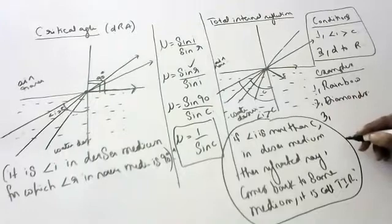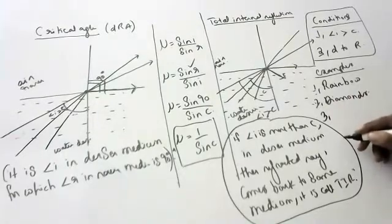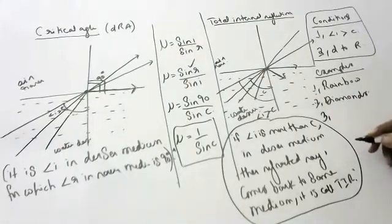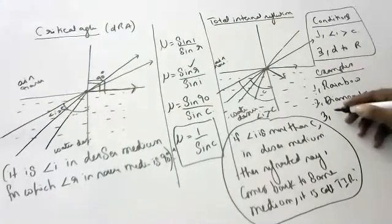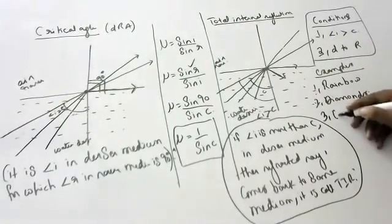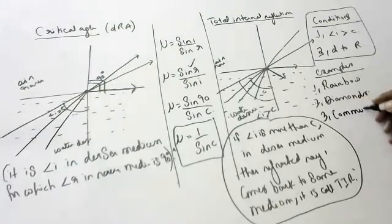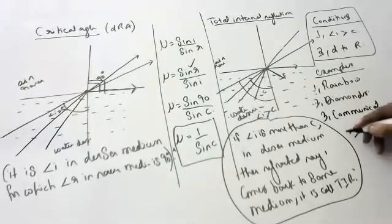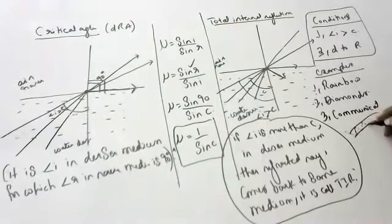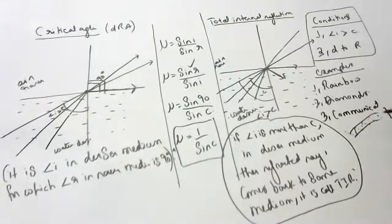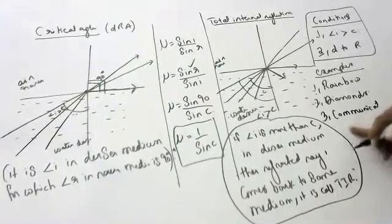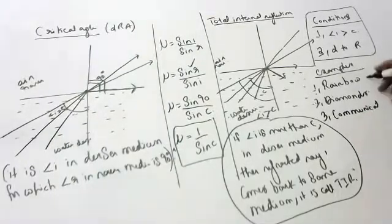Another example is underground cable networks. In telecommunications, underground cables are used, and signals enter at an angle more than the critical angle. The signal continuously undergoes total internal reflection and reaches the other end, giving you clear signals.